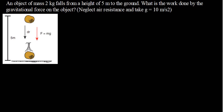Let's talk about potential energy. I've got a question here which is saying: an object of mass 2 kg falls from a height of 5 meters to the ground. What is the work done by the gravitational force on the object? Ignore air resistance and take g to be 10 meters per second squared.